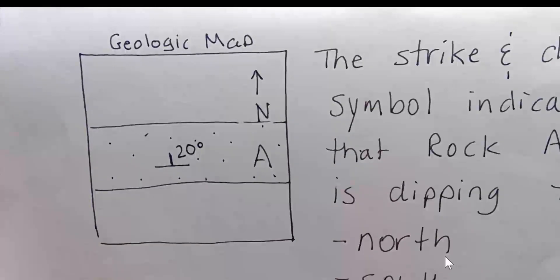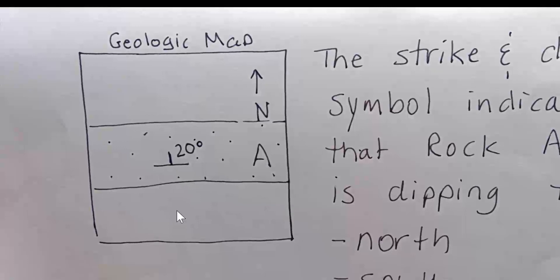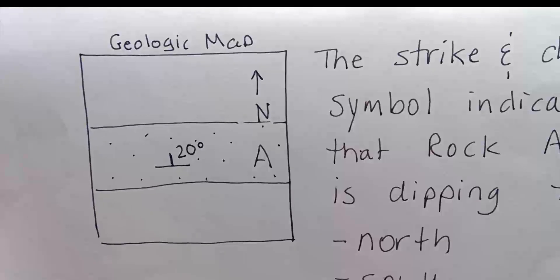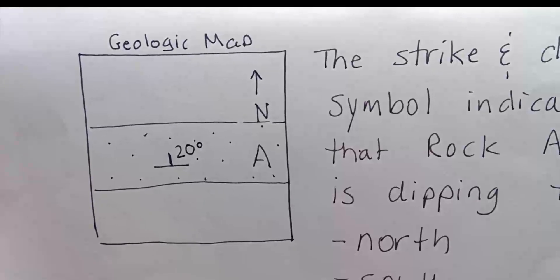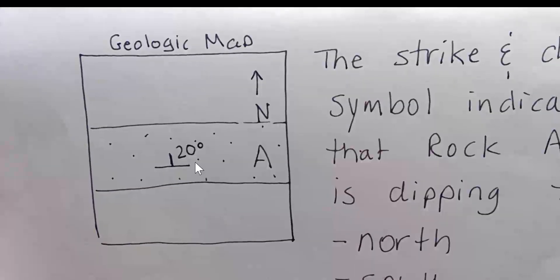I hope you said it would roll to the north because that strike and dip symbol with this little kind of base of this T-shaped strike and dip symbol is saying that rock layer A is no longer horizontal. It has been tilted toward the north at an angle of 20 degrees with respect to the horizontal.